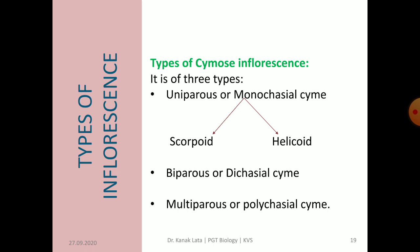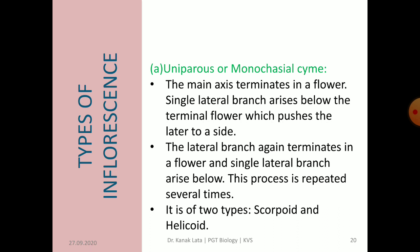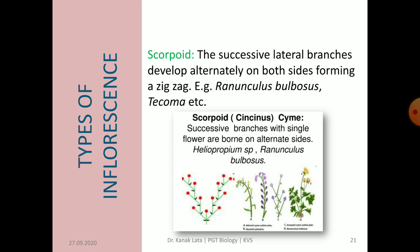First is uniparous cyme or monochasial cyme. In this case, the main axis terminates into a flower and a single lateral branch arises below the terminal flower, pushing the axis to one side. Again the lateral branch terminates in a flower and a single lateral branch arises below, and this process is repeated several times. This type is divided into two sub-types: scorpioid and helicoid. In scorpioid monochasial cyme, the successive lateral branches arise alternately on both sides, forming a zigzag-like pattern. It is commonly observed in Ranunculus bulbosus and Tacoma. In the given figure, you can observe the scorpioid inflorescence.